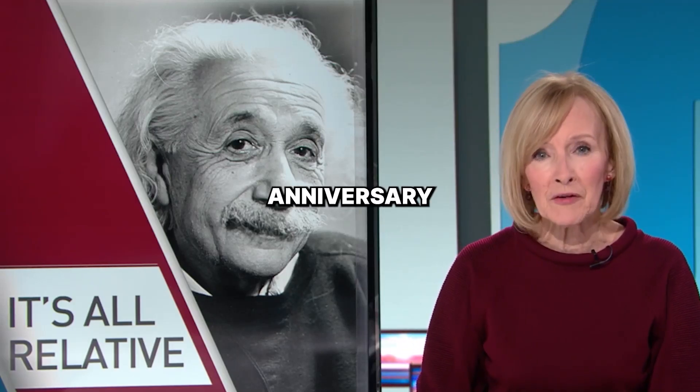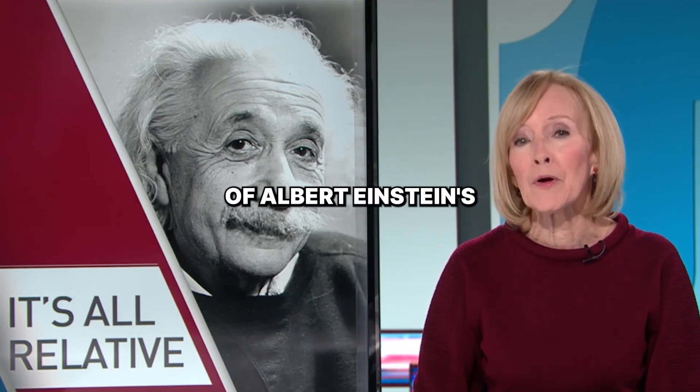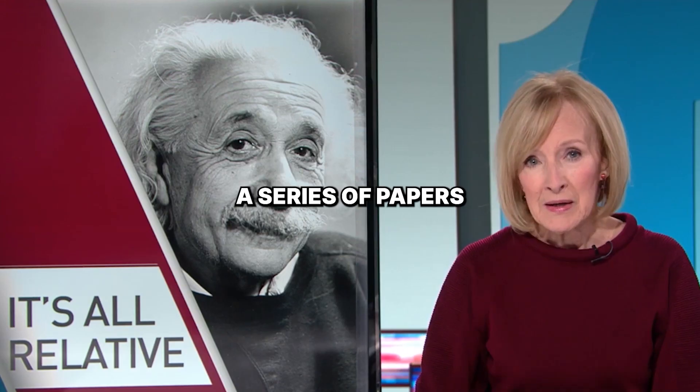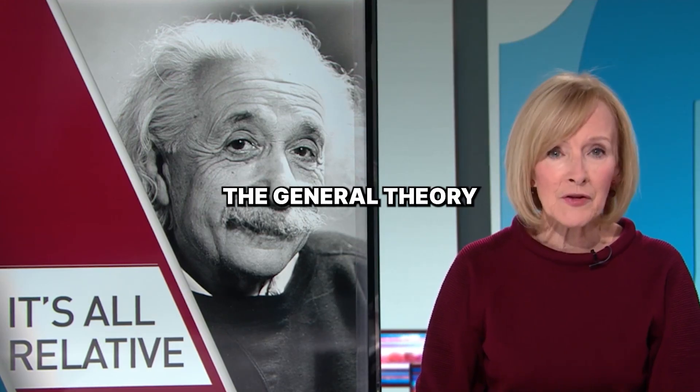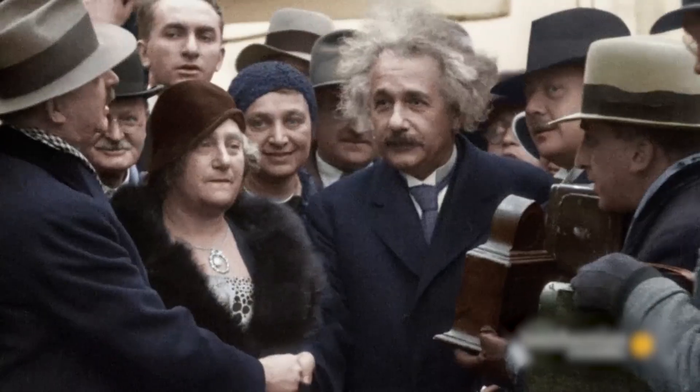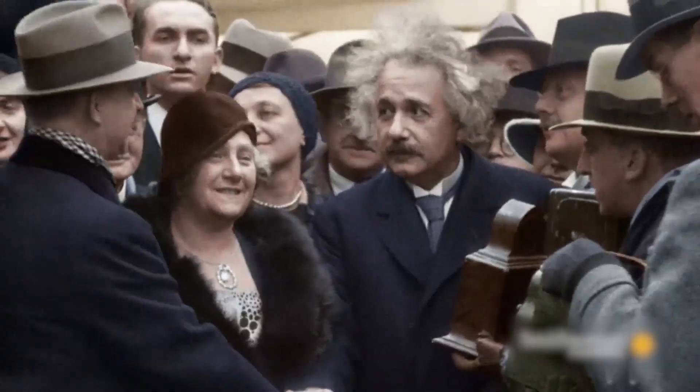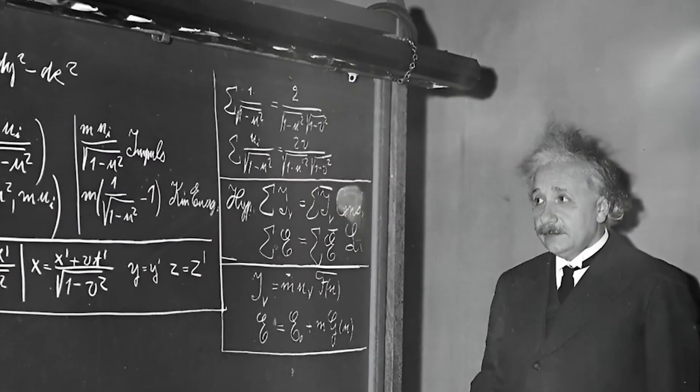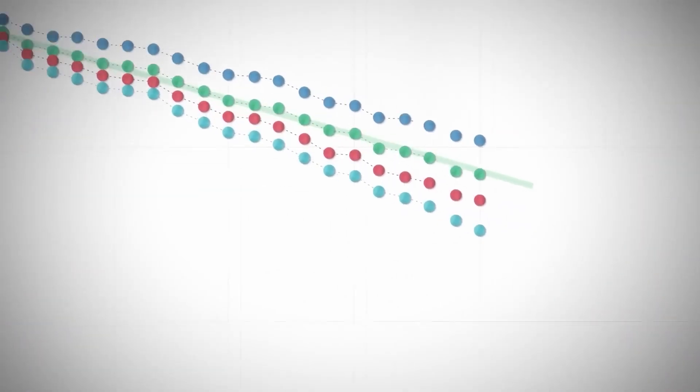This week marks the 100th anniversary of the publication of Albert Einstein's greatest work, a series of papers laying out the general theory of relativity. Einstein attempted to unify the universe with a single perfect equation. He came close, but left behind a mystery too strange to solve.